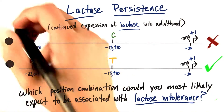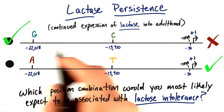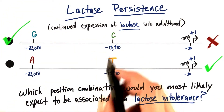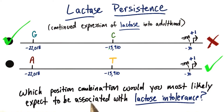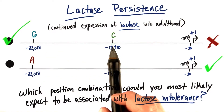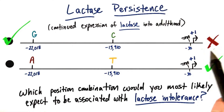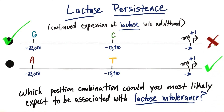The answer to this question is the top combination, the G and C. Remember that the G and C combinations reduce lactase expression into adulthood. Without lactase, we can't digest lactose, and so we're going to show symptoms of lactose intolerance.